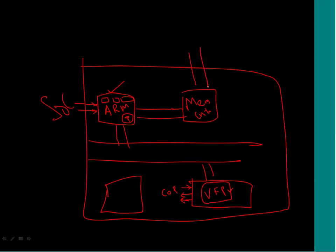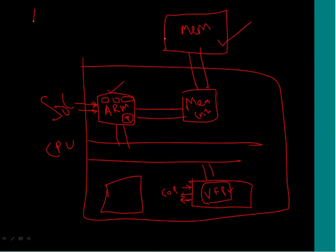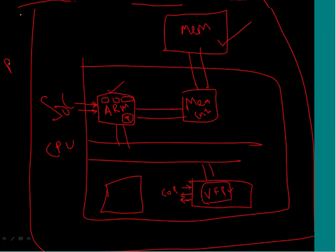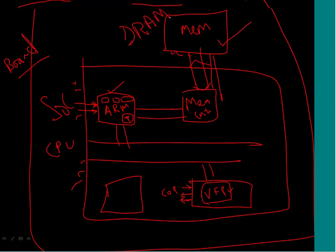We are going to come out of the SOC and see what different kinds of memories exist. We can call this whole thing the CPU, and then there is memory in the system - maybe an embedded board or embedded system which has a SOC with all its pins. We have a memory controller with address and data buses coming out from the controller.